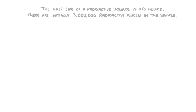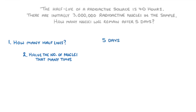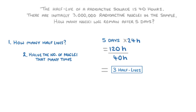Let's try one quick question. The half-life of a radioactive source is 40 hours, and there are initially 3 million radioactive nuclei in the sample. How many nuclei will remain after 5 days? In a question like this, the idea is to first find out how many half-lives there will be, and then halve the number of radioactive nuclei that many times. So first, we take 5 days and multiply by 24 hours to get 120 hours, then divide by 40 — the source's half-life — to find that the sample would have undergone 3 half-lives.